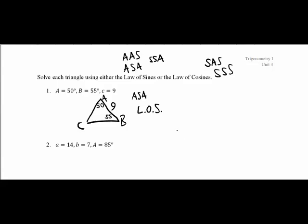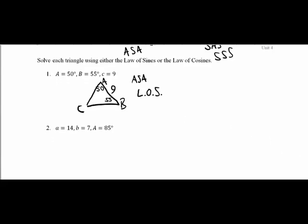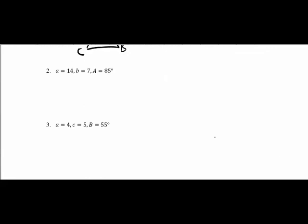In the next example I have a side that is 14 and that is going to be side A across from angle A which is 85 degrees. Angle B which I don't know has a side corresponding to it which is 7 and that's all I know. So here I have two sides and I have an angle.